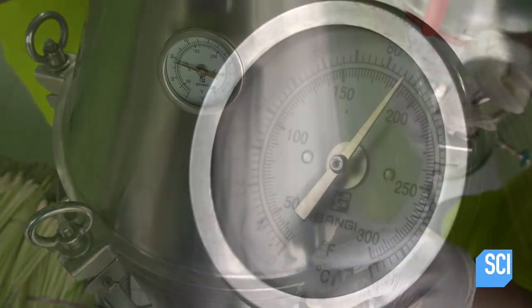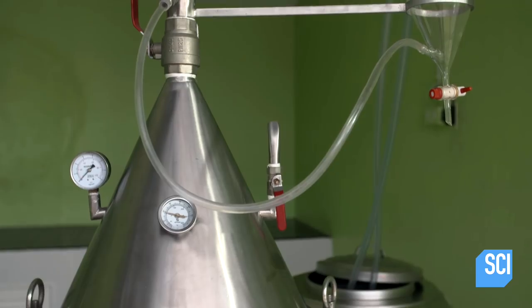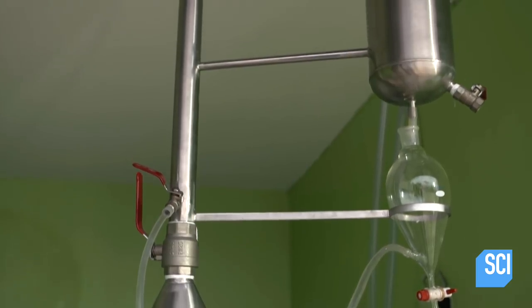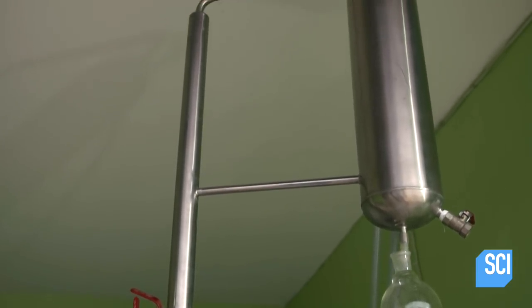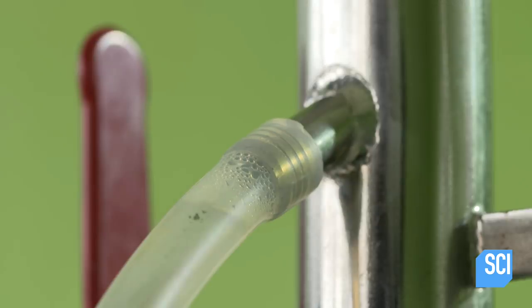They activate the still and it heats the water to the boiling point. Steam rises through the plants and picks up the oils. It carries the oil vapor up through a pipe and into a condenser, where the vapors cool and return to a liquid form.